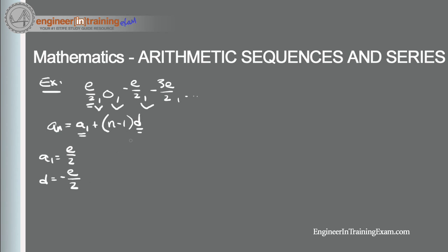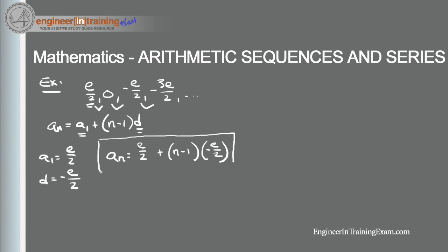Now all we need to do is plug this information into the general equation to determine the general formula of this arithmetic sequence, which is a_n = e/2 + (n - 1)(-e/2). So we took some terms and determined the general formula for that arithmetic sequence.